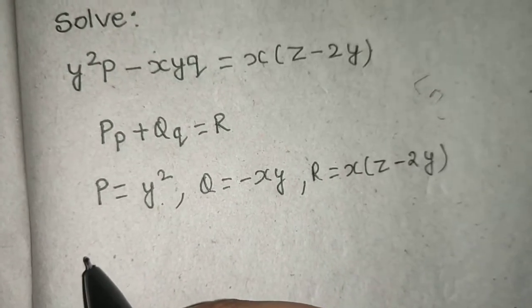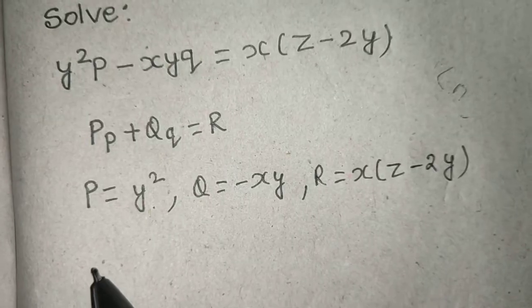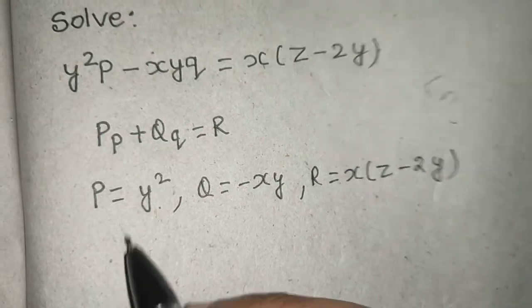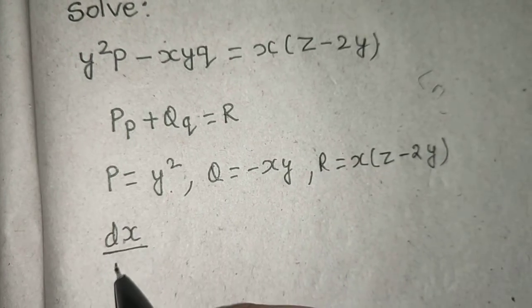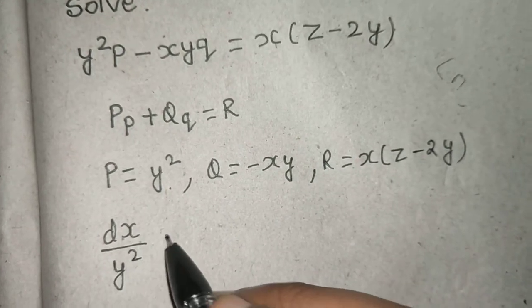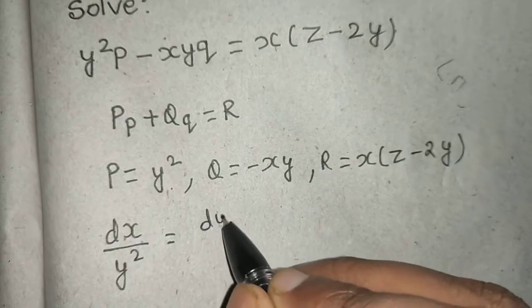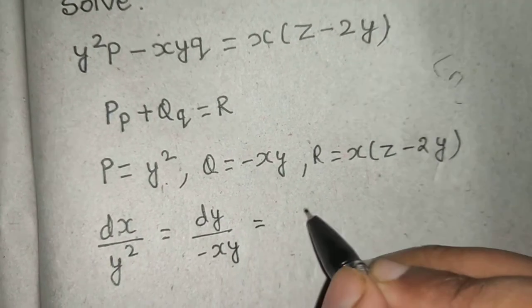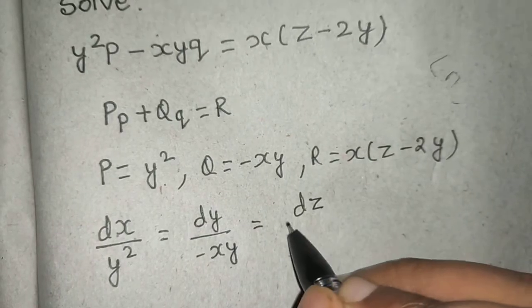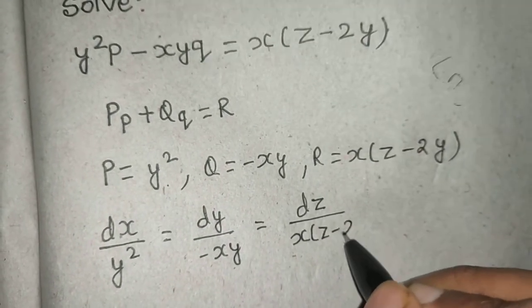Accordingly we can write the auxiliary equation or subsidiary equation of Lagrange's method, which is dx/P = dy/Q = dz/R. Now let's see whether we are able to generate two equations from these three ratios.